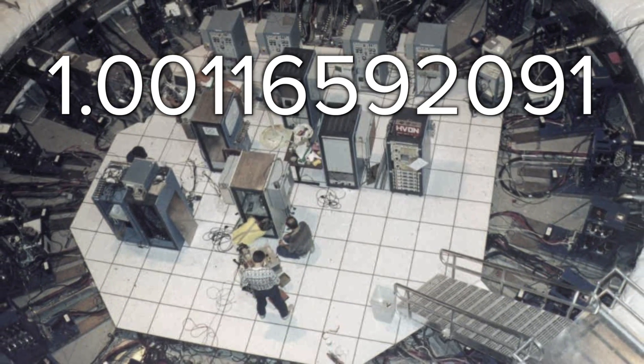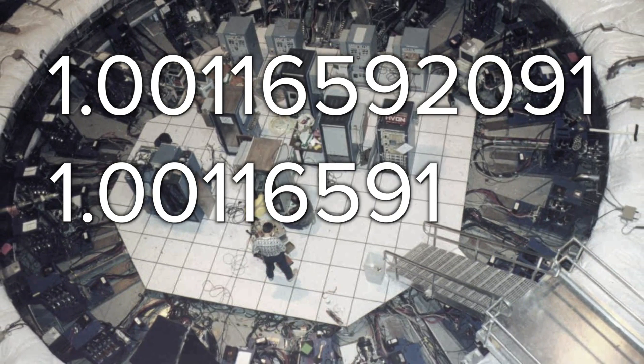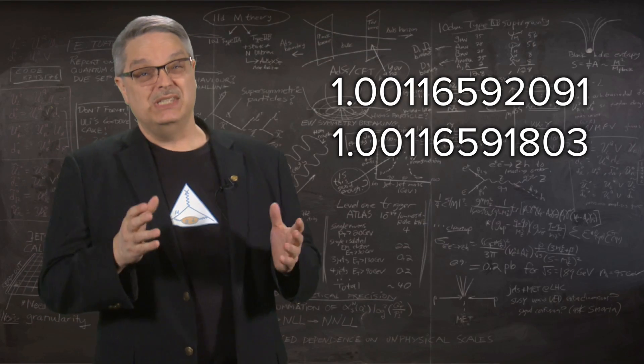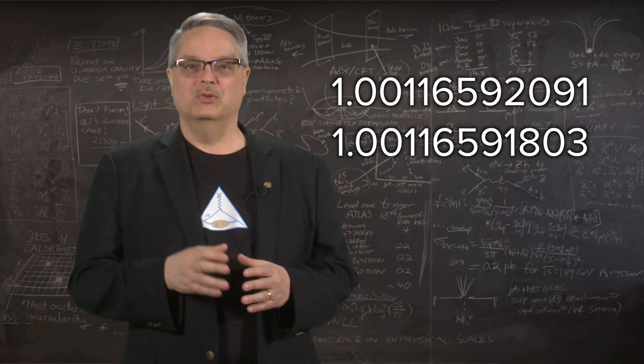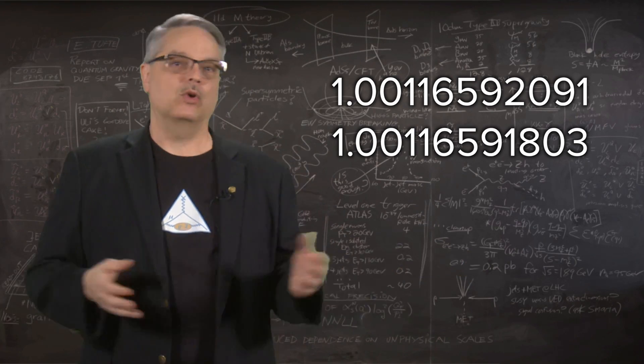And to give you a basis of comparison, the prediction is 1.00116591803. So we see that these two numbers agree pretty well, although not to as many digits as for an electron. That's not surprising. It's harder to work with muons.